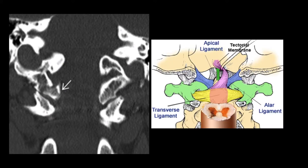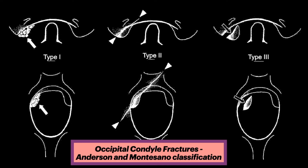Here again is the coronal CT showing the occipital condyle fracture where the alar ligament attaches. More specifically, this was a type 3 occipital condyle fracture.